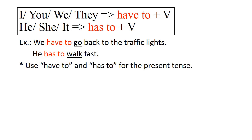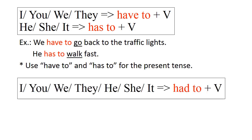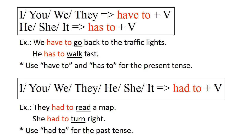Chúng ta sử dụng 'have to' và 'has to' cho thì hiện tại. Thế còn thì quá khứ chúng ta sẽ dùng gì? Với tất cả chủ ngữ I, you, we, they, he, she, it đều dùng 'had to.' Và sau đó cũng là một động từ nguyên mẫu. Example: They had to read a map. She had to turn right.